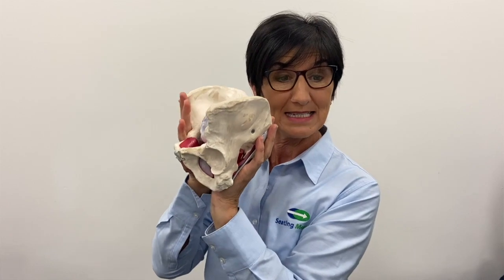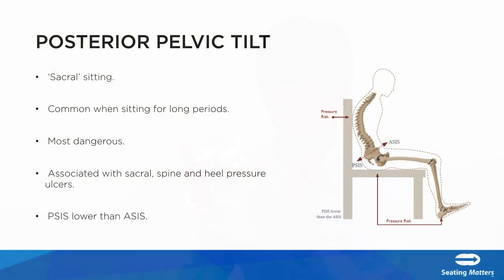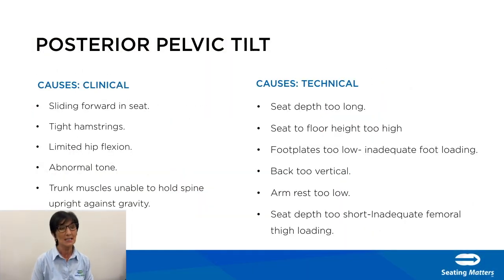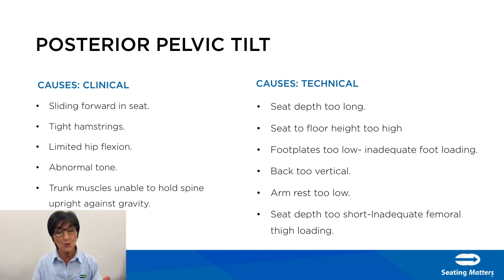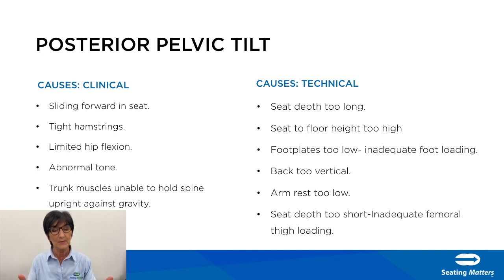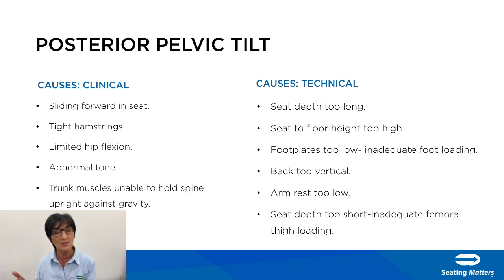What causes posterior pelvic tilt or sliding forward in the seat? Clinically, the main reasons may be tight hamstrings, limited hip flexion, abnormal tone, or trunk muscles that are unable to hold the person upright against gravity. When doing an assessment, look at the clinical reasons why someone sits like that, but also look at the technical reasons — how is the chair contributing to this posture?